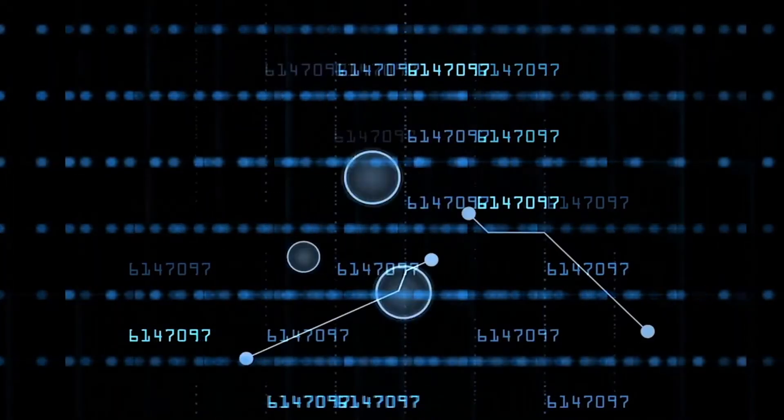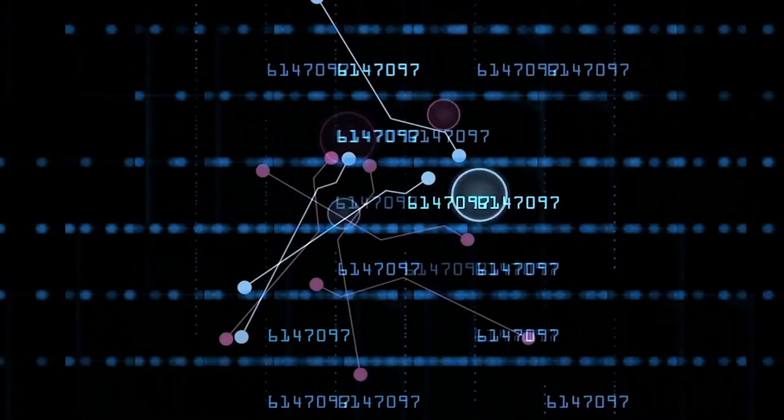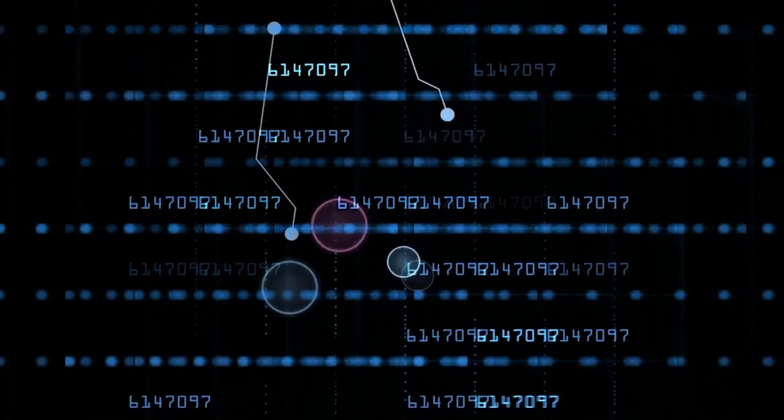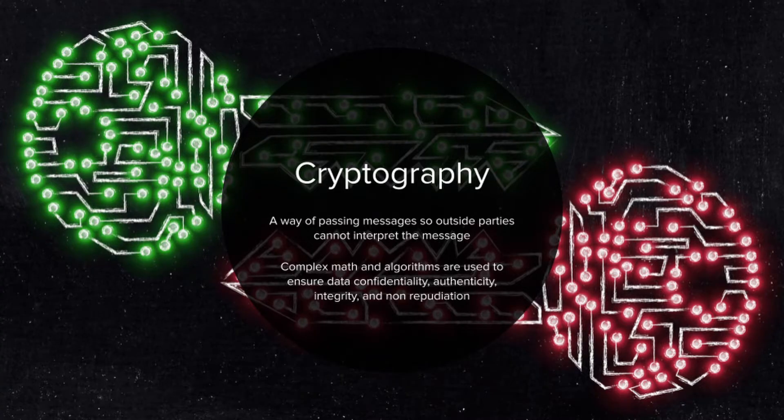Well, that's where cryptography, the blockchain, and some pretty interesting math come into play to track Bitcoin transactions and ensure each Bitcoin is legit and nobody is creating malicious transactions. Since Bitcoin transactions are more or less public knowledge, sending secret messages is less important than verifying the information, which still uses the principles of cryptography. Cryptography is essentially the process of passing messages between parties so that any outsiders are unable to understand what the message is. It can involve using complex math and algorithms to ensure data confidentiality, authenticity, integrity, and non-repudiation.